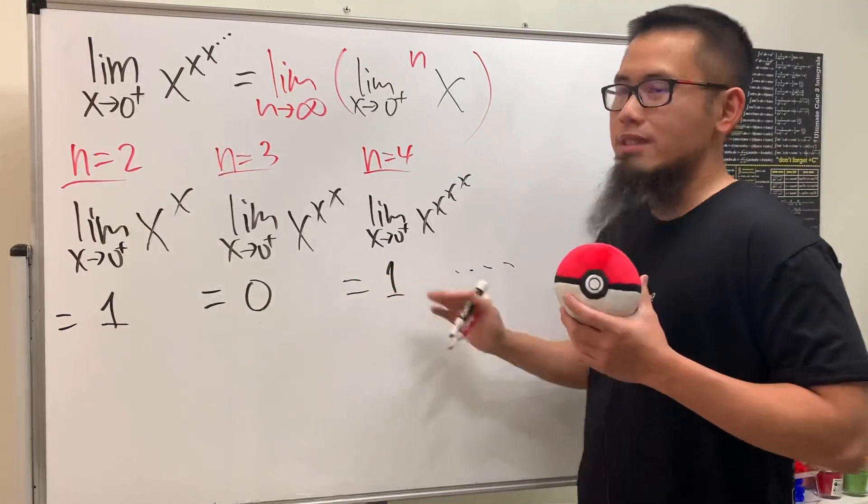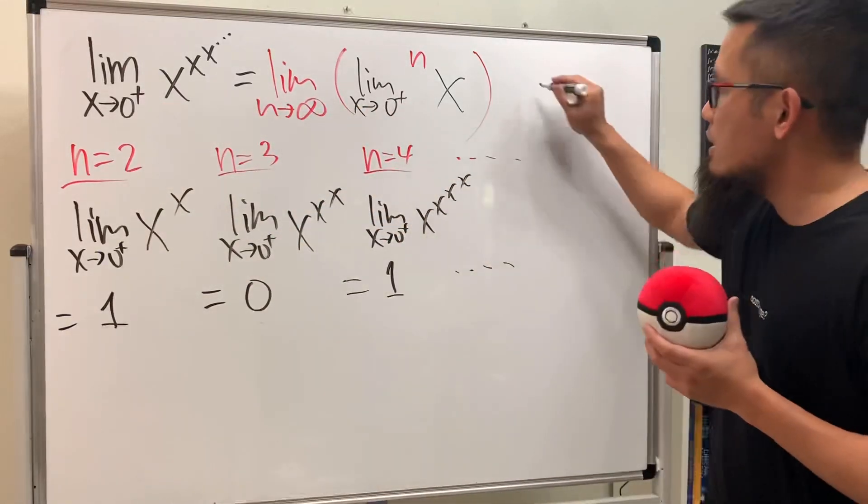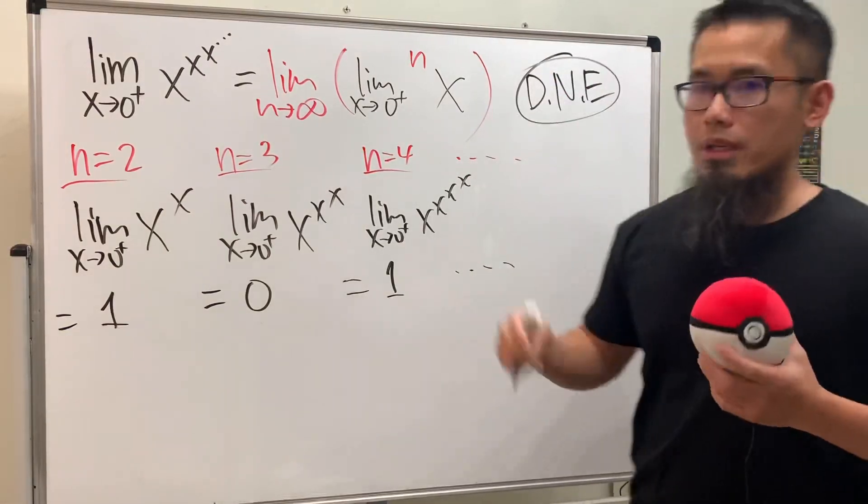As you can see, this keeps going: 1, 0, 1, 0, 1, 0... You see that you don't actually approach anything. The answer is does not exist - it does not converge.